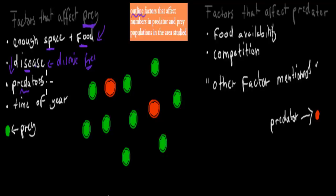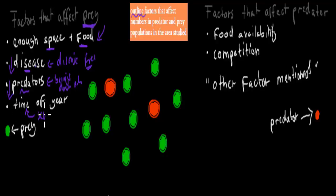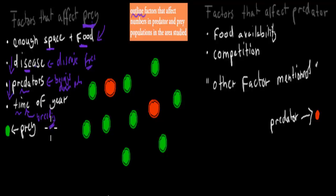The more predators there are, the lower the prey numbers, because predators eat the prey. Time of year is also important — during breeding seasons, prey numbers would go up, whereas during winter, some might die from starvation and numbers would go down. So time of year affects whether numbers are increasing or decreasing.